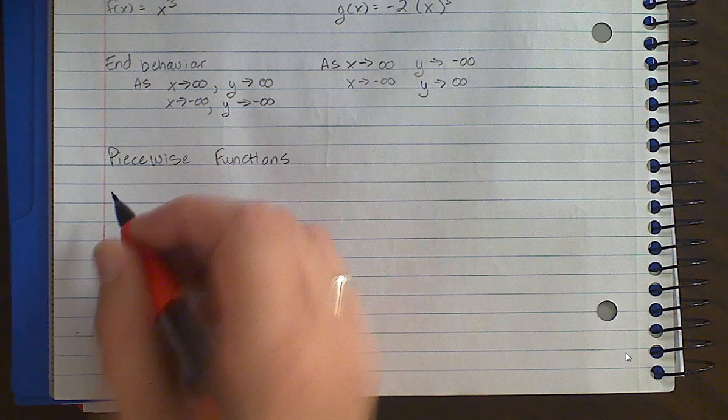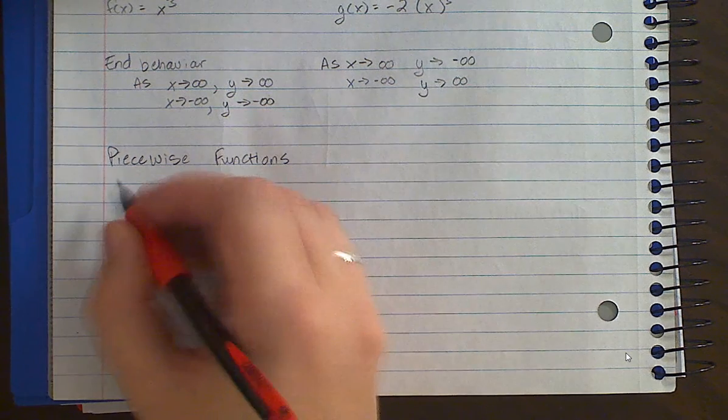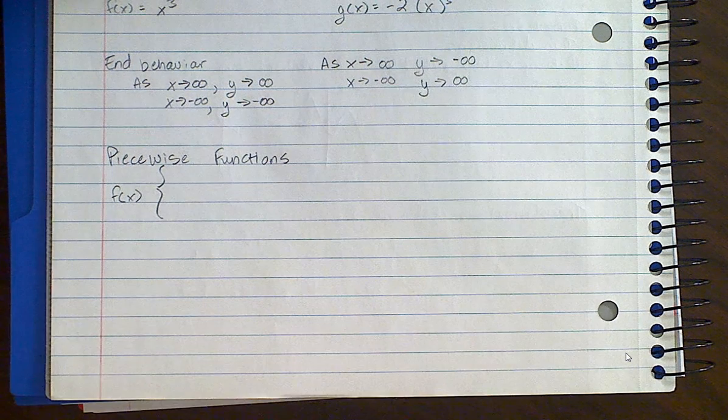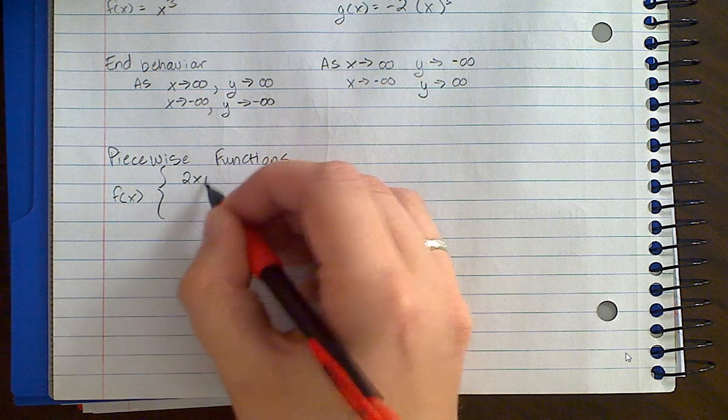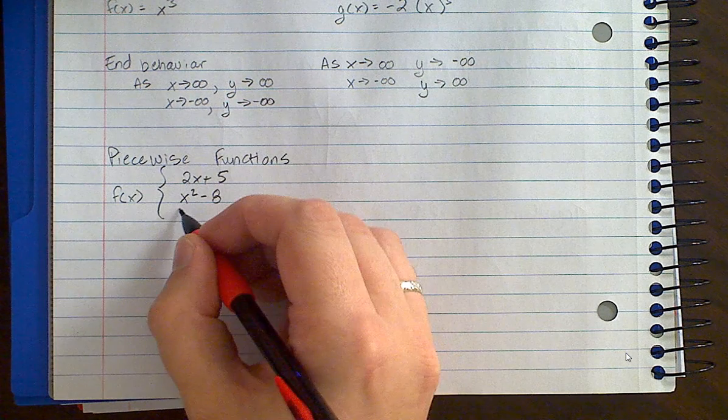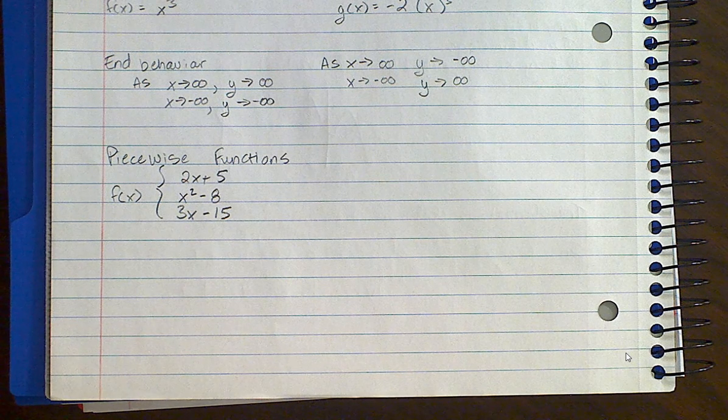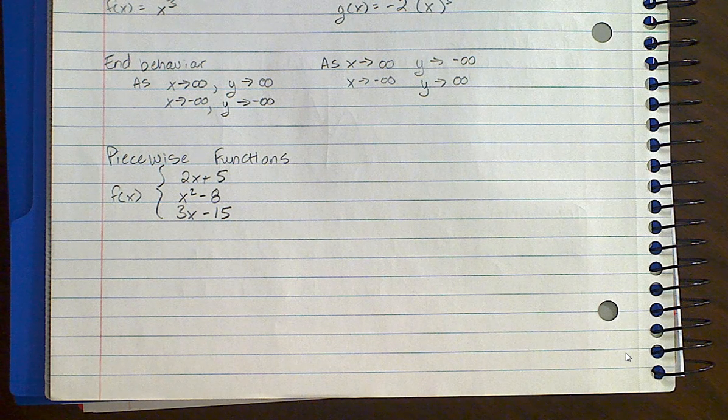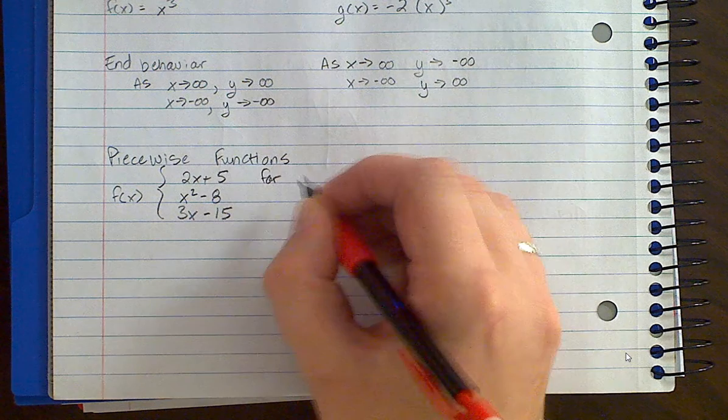So piecewise functions. What these look like. These are functions that are made up of other functions. And I'll show you an example of one. We'll say we've got some function f of x. And then I'm going to use a brace to encapsulate three other functions. So f of x is going to be made up, in this case, of 2x plus 5. It's also going to be made up of x squared minus 8. It is also going to be made up of 3x minus 15. Now these three functions aren't going to be part of the whole function at the exact same time. They have intervals upon which you use each of those functions differently. So for example, I'm going to say that this function is 2x plus 5 only when x is less than negative 3.